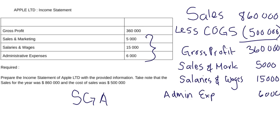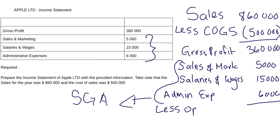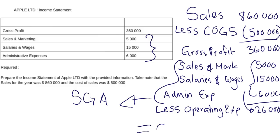In your exams please write the whole thing out fully. All of these together make up your SGA. If we add all of that together: five thousand plus fifteen thousand is twenty thousand, plus six thousand is twenty-six thousand. So after your gross profit you are going to less your operating expenses, which is your twenty-six thousand total.